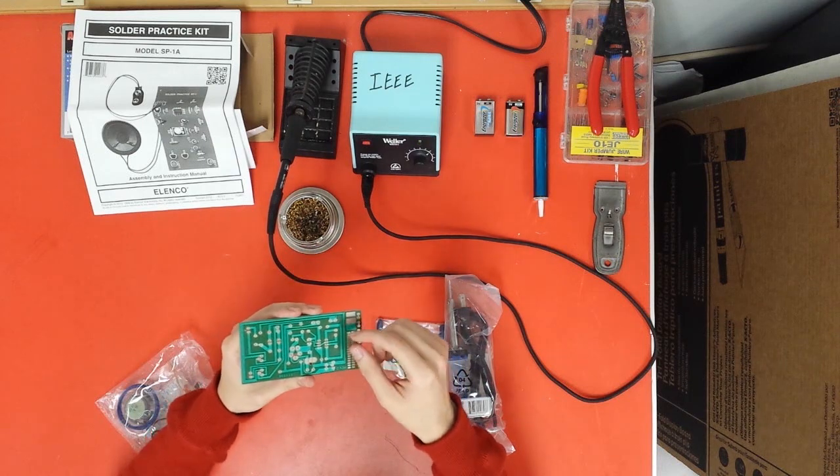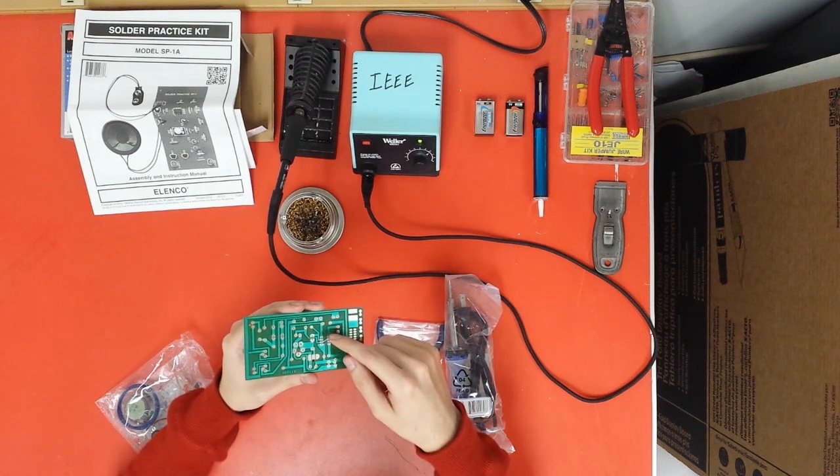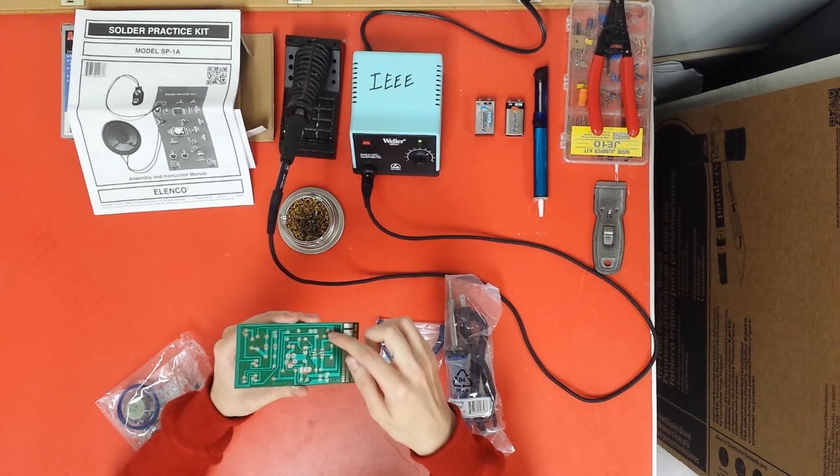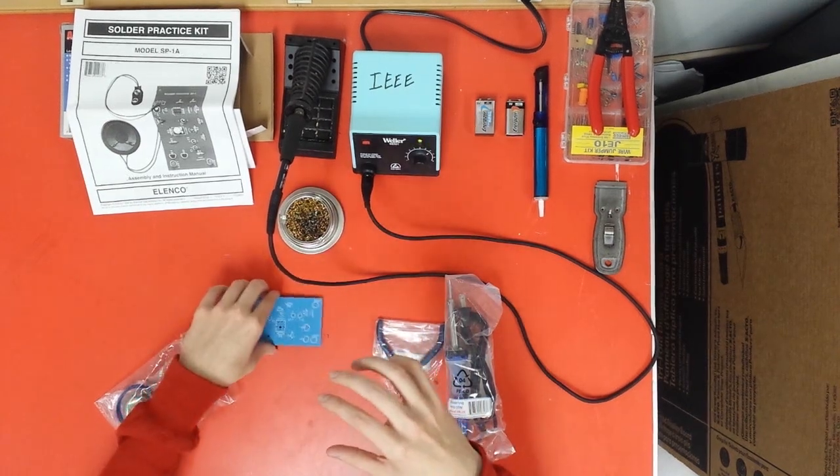Now, the metal legs of the components are the ones you're going to solder. Melt metal, basically, to these little metal openings you see here. So we'll put this down for now.